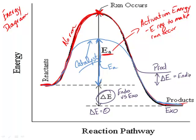So, this is a situation where my products end up higher in energy than my reactants do. So, when the products have more energy, it's endothermic. When the products have less energy, it's exothermic.